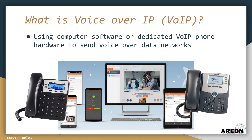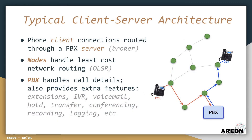In the examples that follow, VoIP phones are connected to Arden radios, which gives each phone an IP address that's reachable on the wider mesh network. A typical VoIP implementation uses the client-server architecture, with VoIP phones as clients which connect to each other through a PBX server. All of the network routing is handled by the Arden nodes, which calculate the least-cost route between devices using the Optimized Link State Routing protocol. The PBX, or Private Branch Exchange server, handles all of the call details, such as creating and maintaining connections between phones.